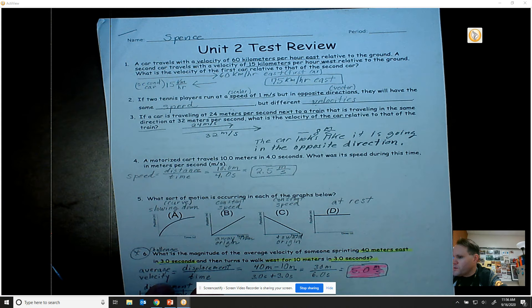All right guys, so I want to go over my study guide for tomorrow. Let's look at problem number one. Problem number one says a car travels at the velocity of 60 kilometers per hour relative to the ground.